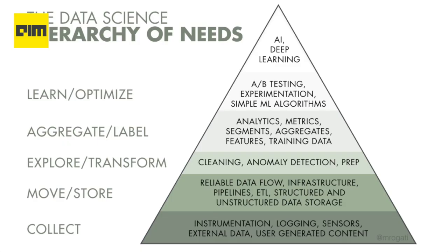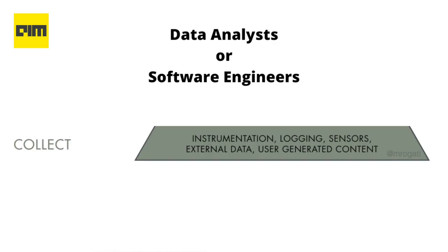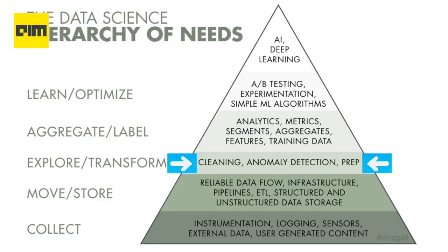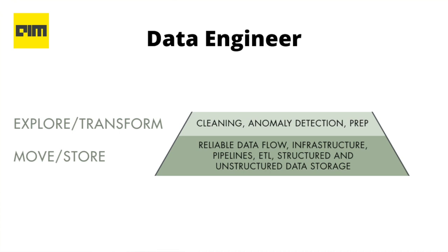To understand the different roles in data science, let's look at the hierarchy of needs. This pyramid is from Monica Rogati's blog — I'll list the link in the description box below. At the bottom of the pyramid, we have data collection: what data do you need and what's available? If it's a user-facing product, are you logging all relevant user interactions? This step is usually undertaken by data analysts or software engineers. Moving higher up, how does the data flow through the system? Do you have reliable streams or ETL? Where do you store it and how easy is it to access and analyze? These two steps — data flow and data cleaning — are the role of a data engineer.